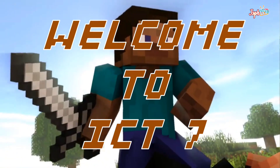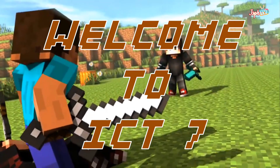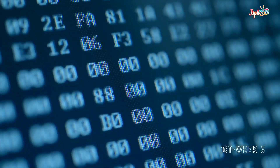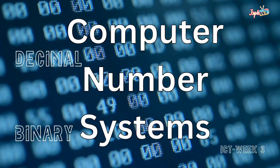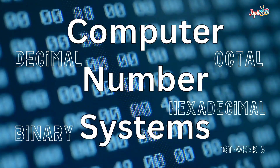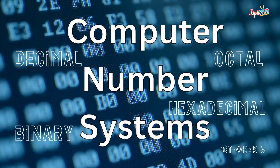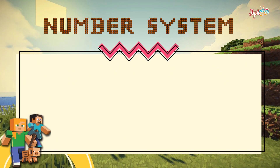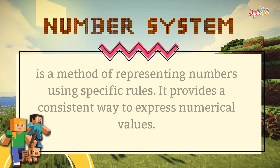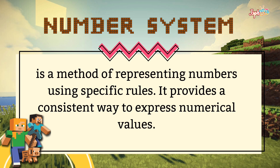Welcome to iCity 7. Today, for week 3, we will tackle the computer number system: decimal, binary, octal, and hexadecimal. First, let us define what a number system is. A number system is a method of representing numbers using specific rules; it provides a consistent way to express numerical values.